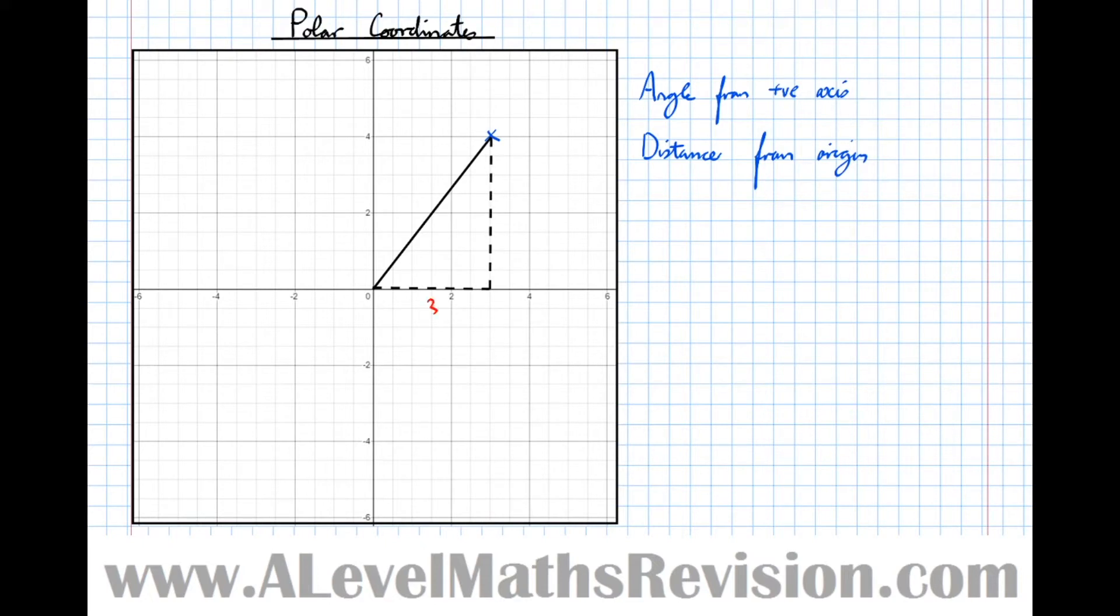So the x distance was 3, the y distance was 4, so the distance r from the origin is the square root of 3 squared plus 4 squared, which we know is 5.